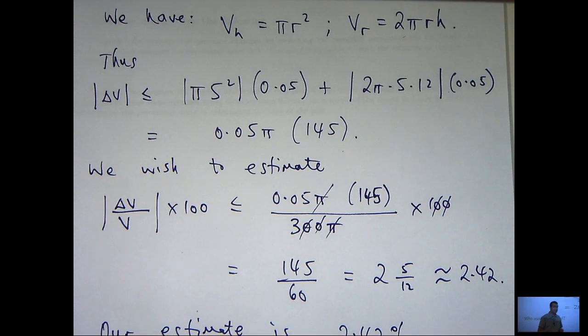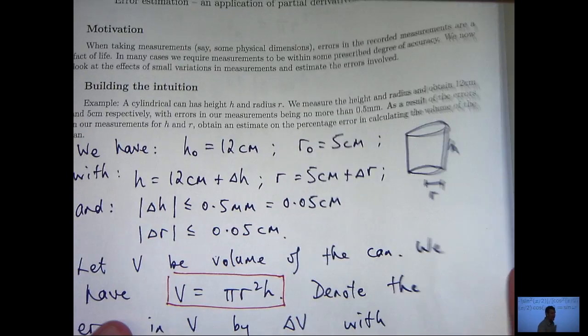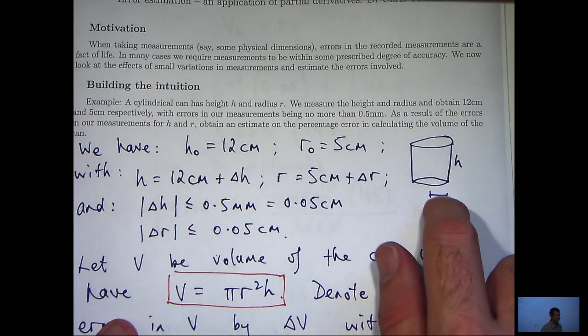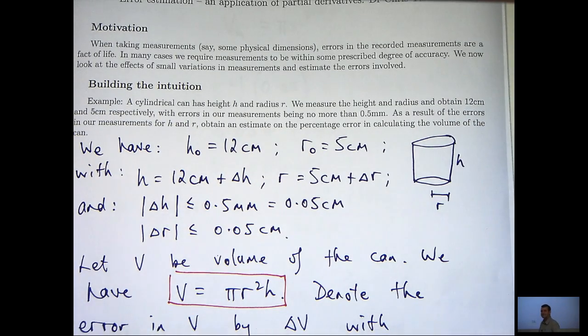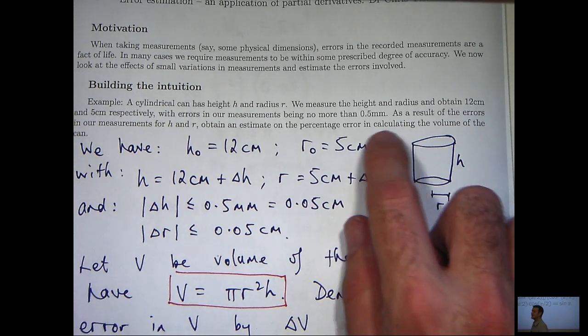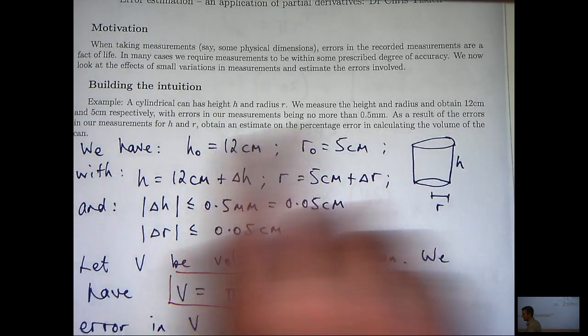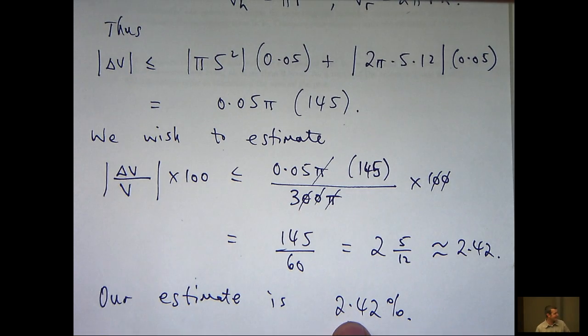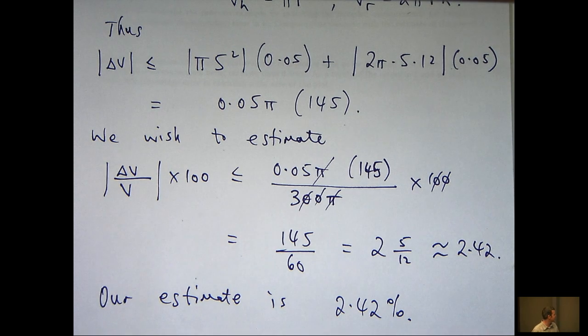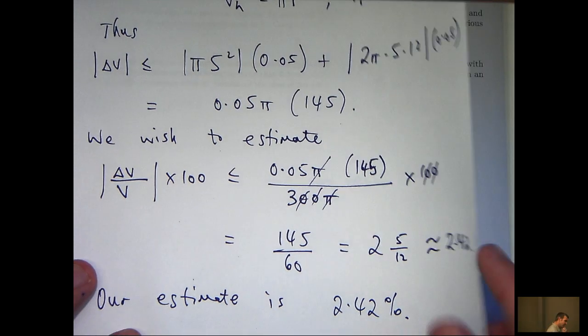So let's review. Based on our measurements, we can expect an estimate or I guess worst case scenario. In calculating the volume of the can, the worst amount we're going to be off is about 2.42%. Is this acceptable? Is this not? Well, we're not told. But let's look at the bigger picture.